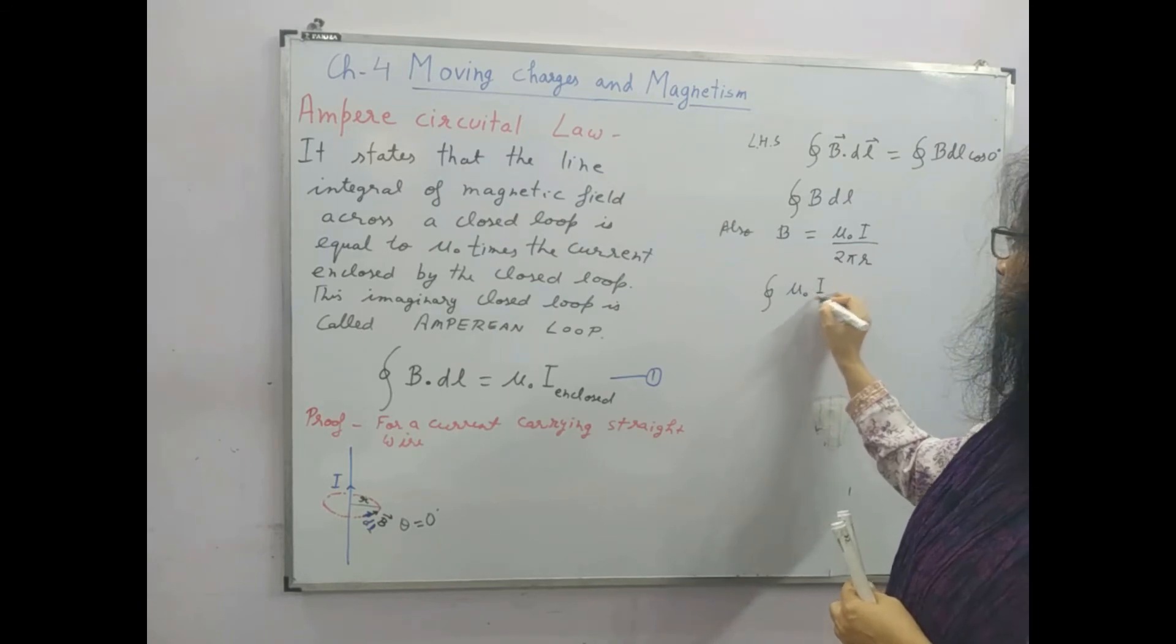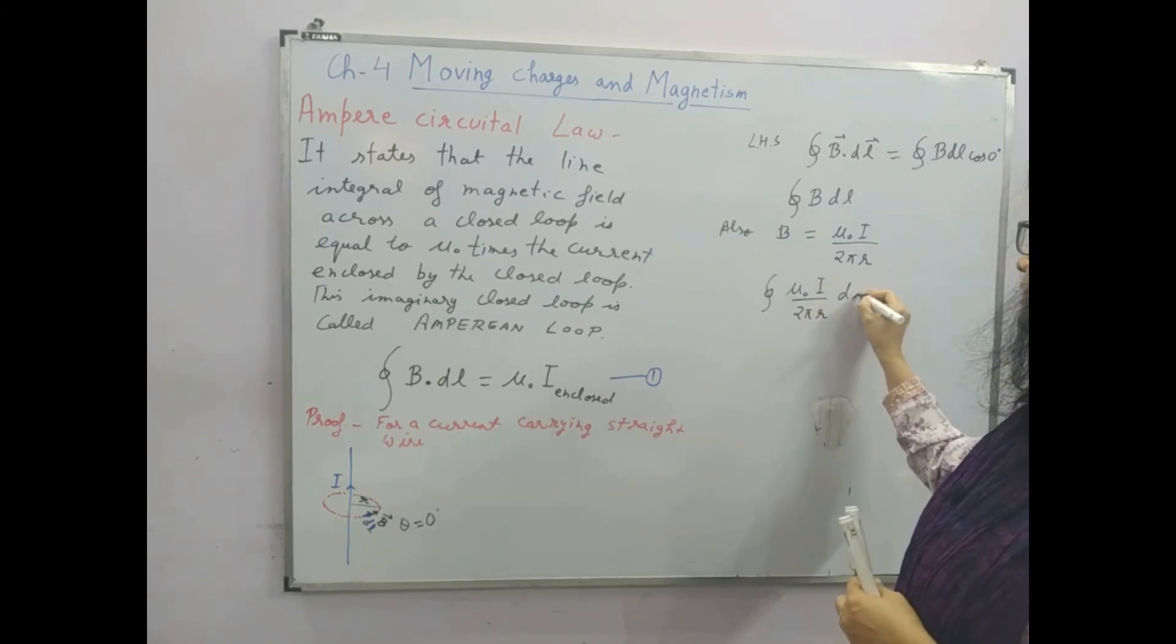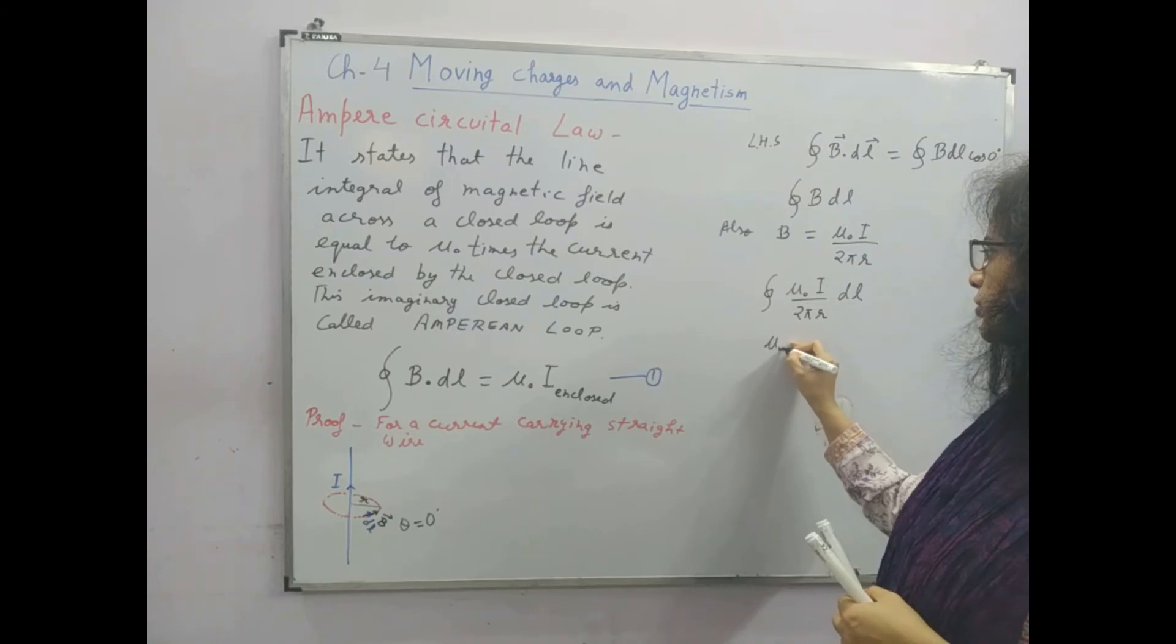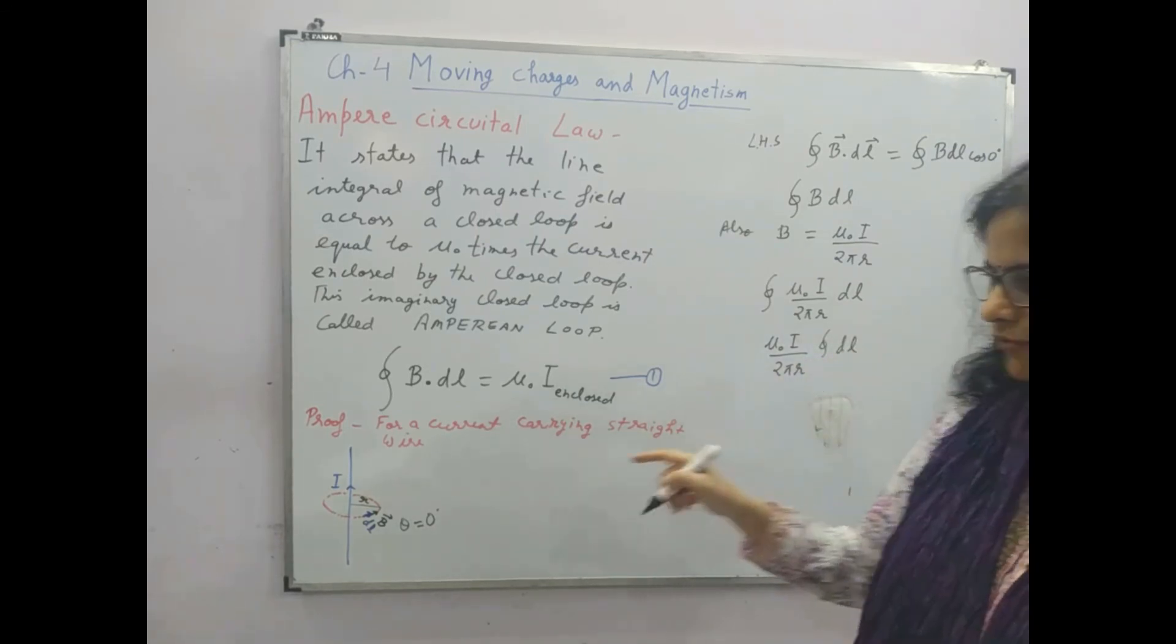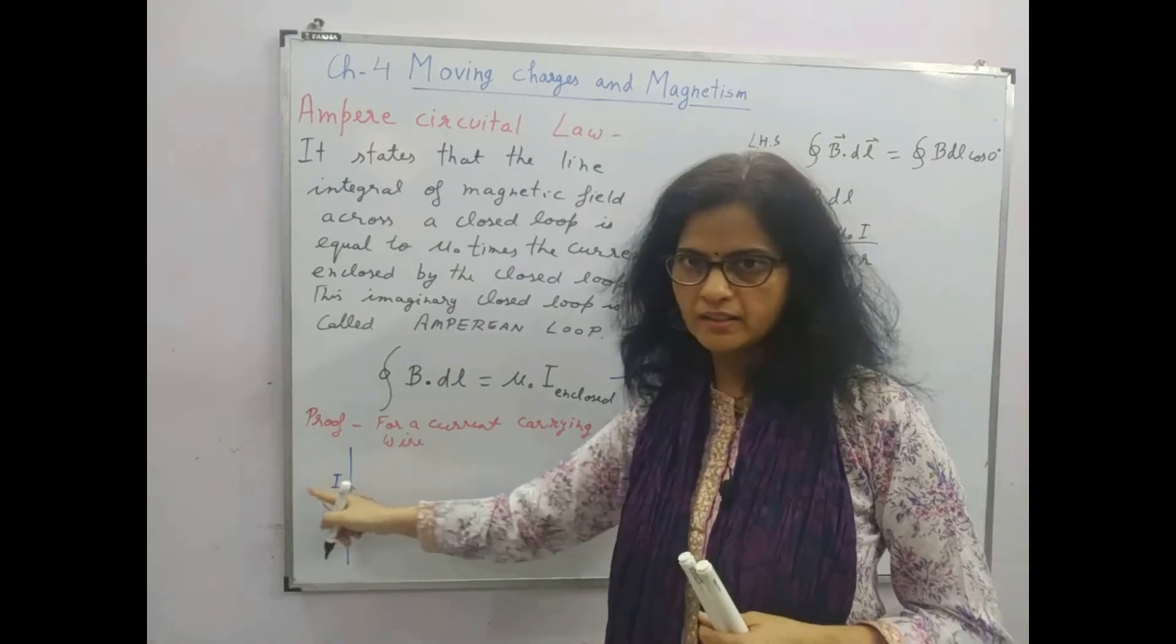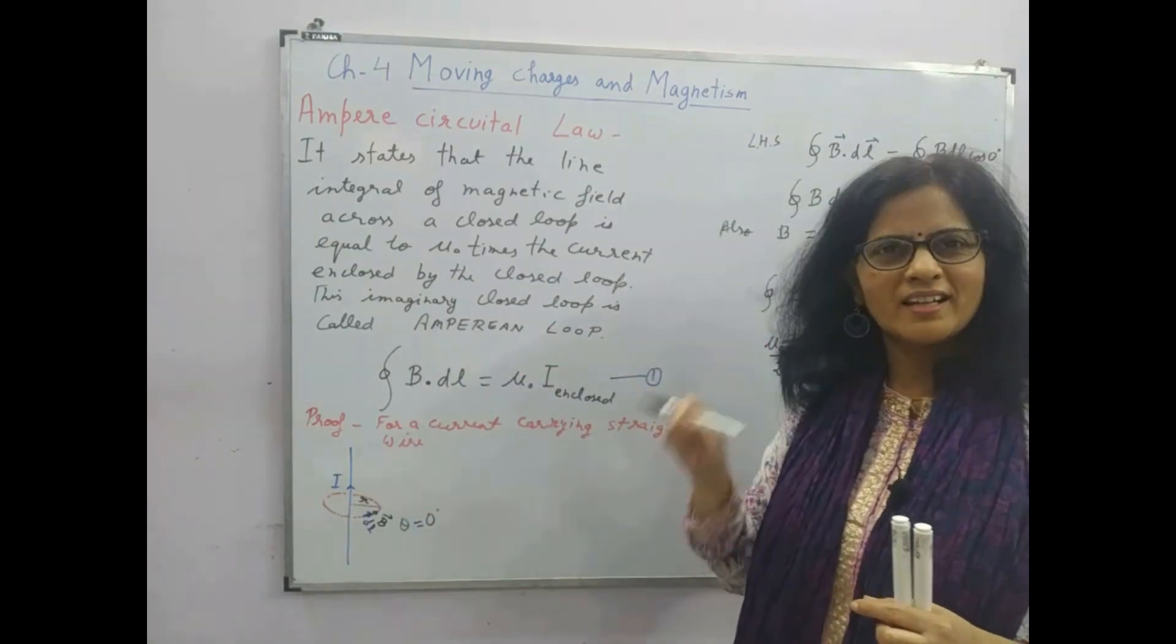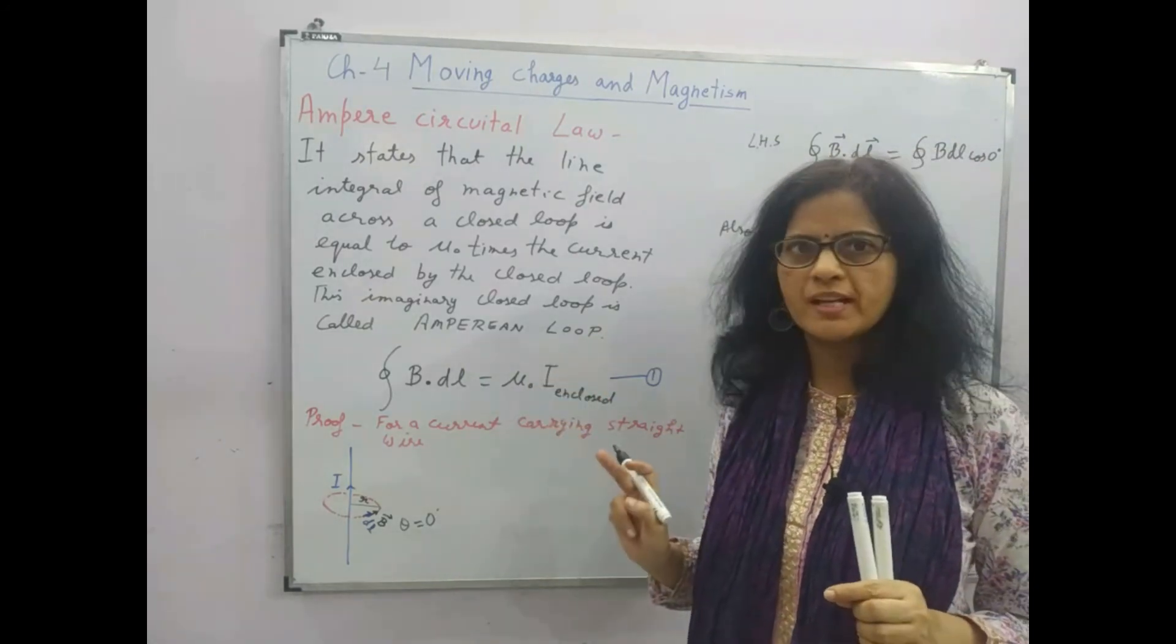We can take this mu 0 i upon 2 pi r outside. So mu 0 i upon 2 pi r, and we will integrate this dl, and this integration of dl for the closed path, this complete Amperean Loop. So if we integrate dl, it will give us the total circumference of this Amperean Loop.